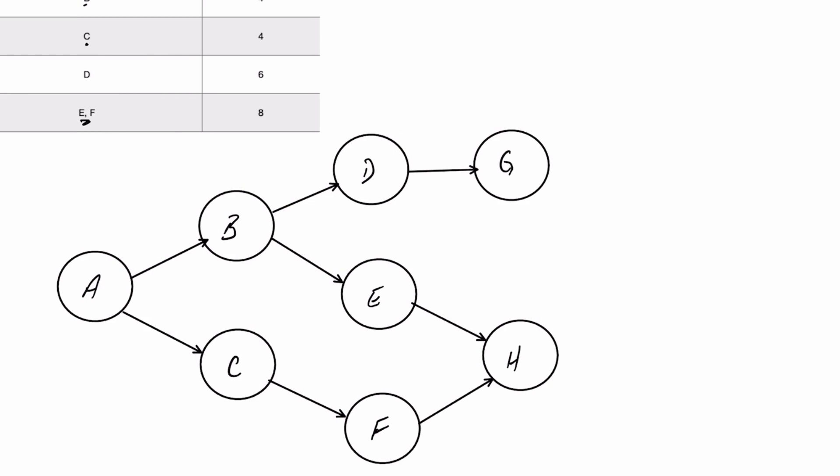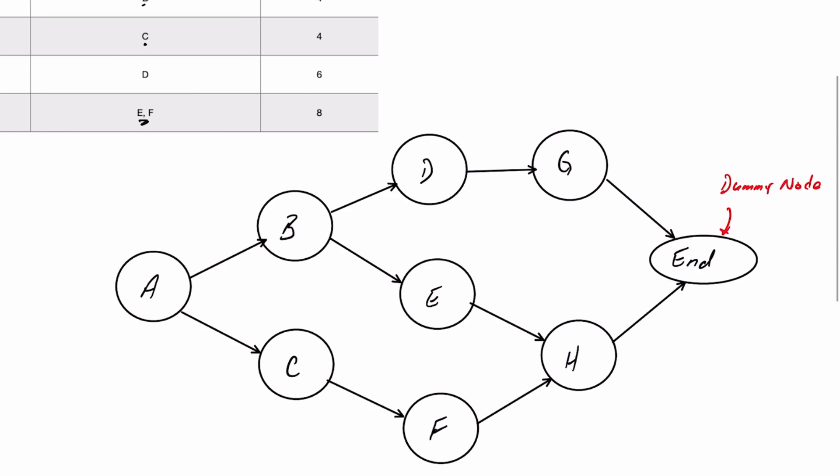Now you'll notice that G and H are the last Activity Nodes, and they actually need to come to an end. So we're going to create an oval to represent an endpoint, and we'll just move that a little bit closer so that Activity G and H can then come to that endpoint. We call this endpoint a dummy node, and we only need to use it if we have more than one activity that's the last one in the list.